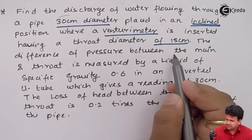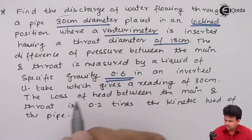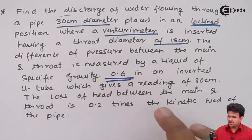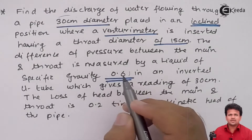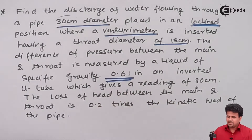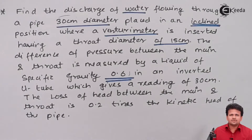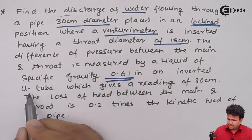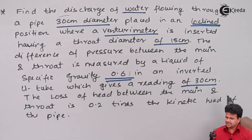The difference in pressure between the main and the throat is measured in a liquid having specific gravity 0.6. In a U-tube manometer, the specific gravity of the fluid used, that is mercury, is 13.6. This is the first problem where the specific gravity of the liquid is less than that of water. This inverted U-tube gives a reading of 30 centimeters.